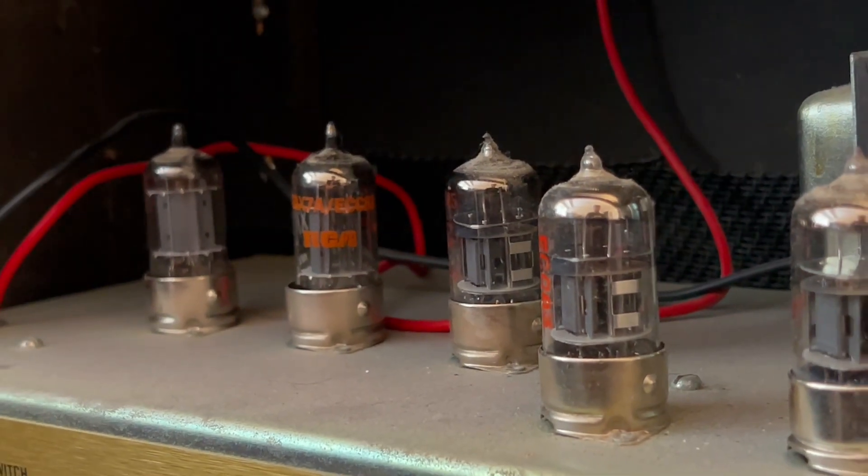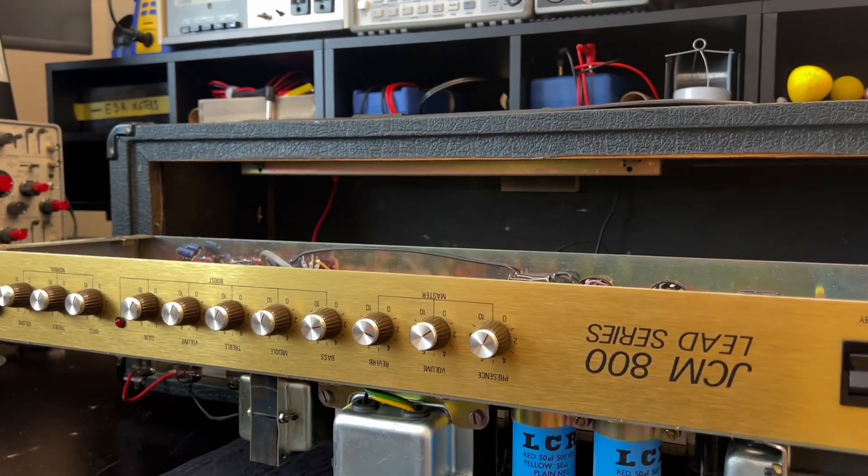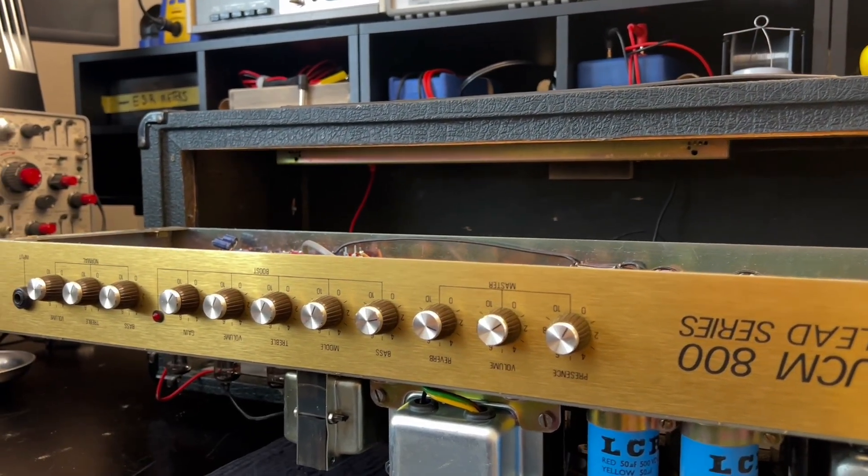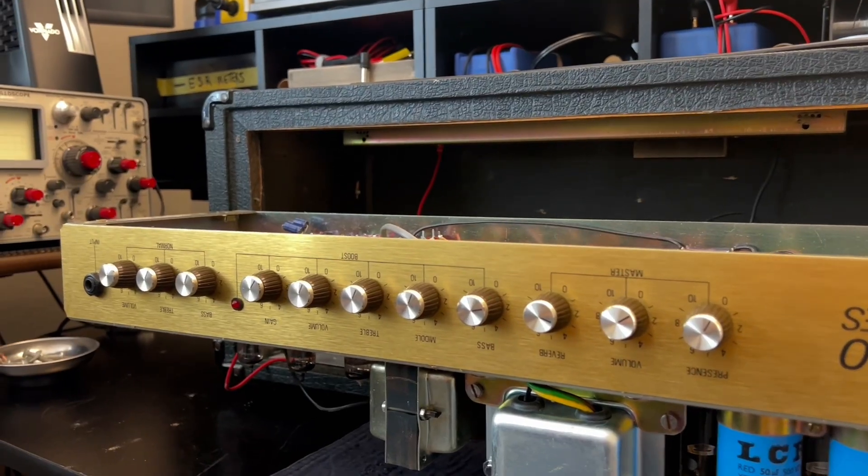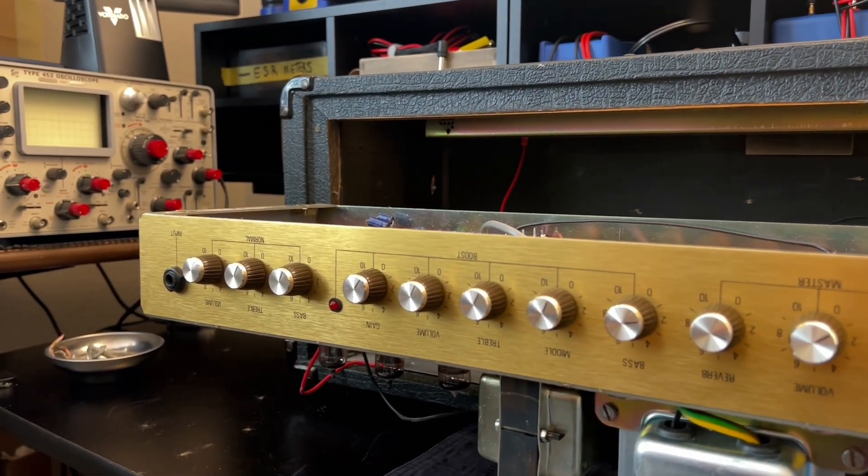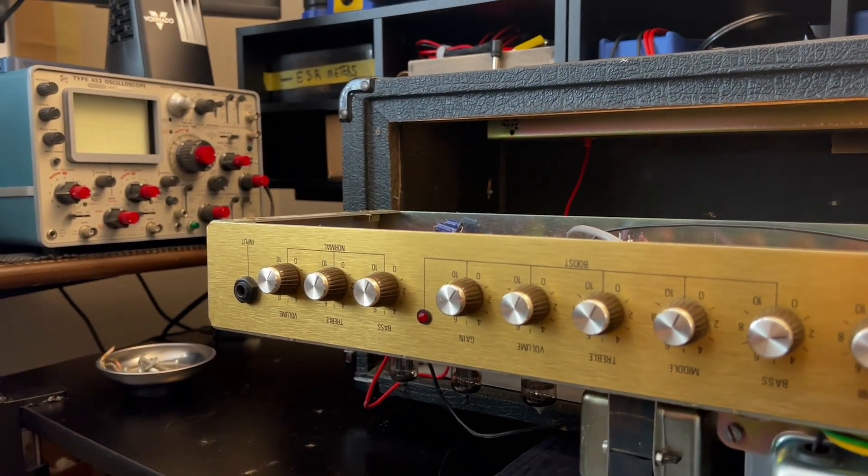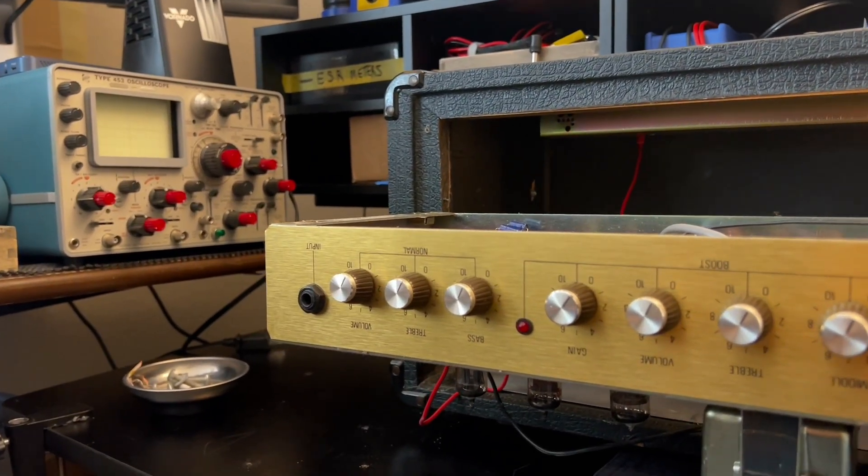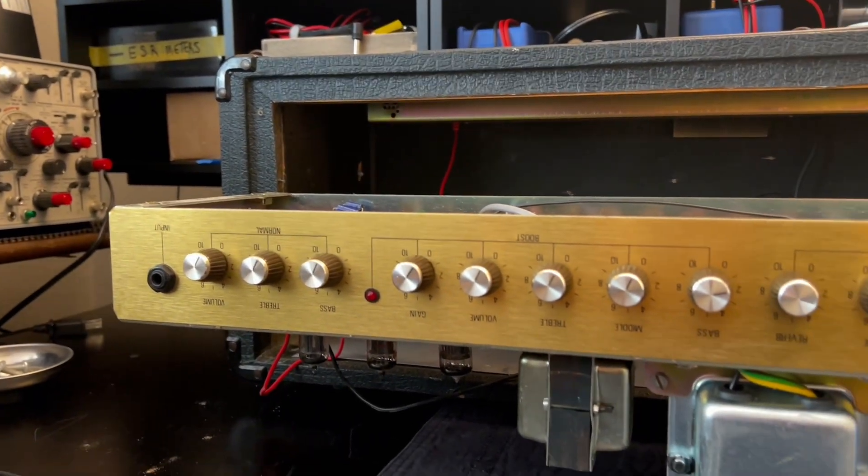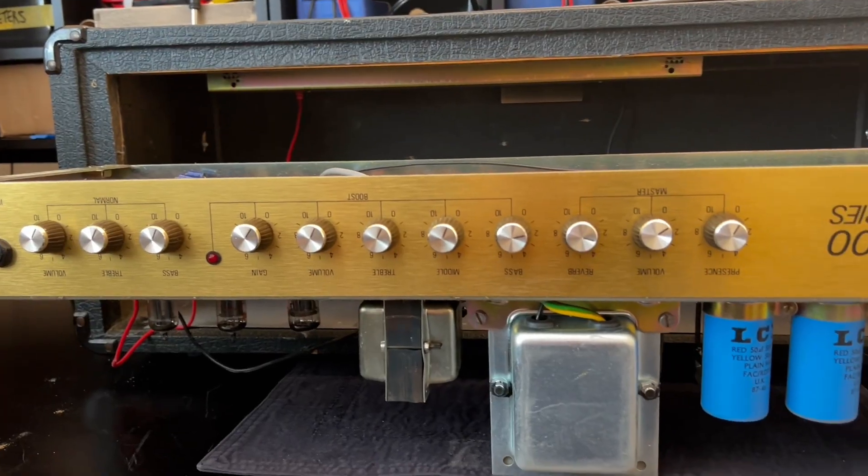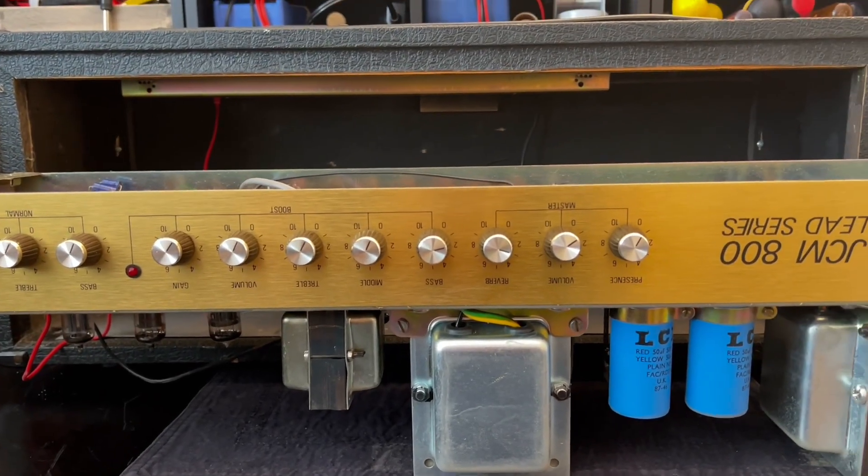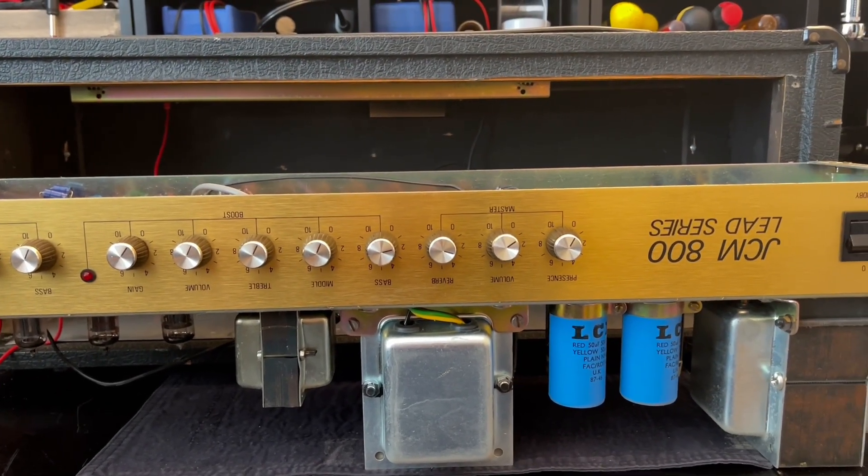So this is a 1987. What a great year for music, by the way. Seventh Son of a Seventh Son or Somewhere in Time had come out from Maiden. What a decade, and what an amp to represent that decade. Simpler times.